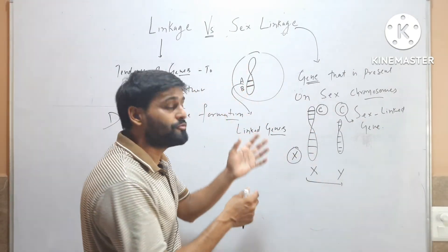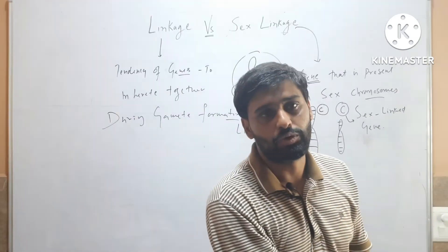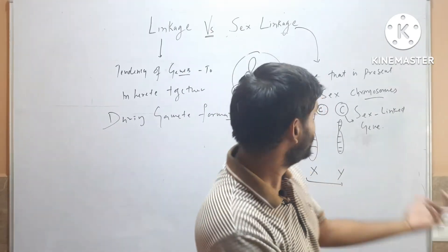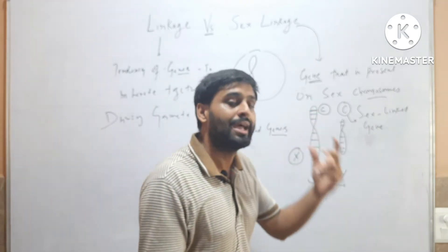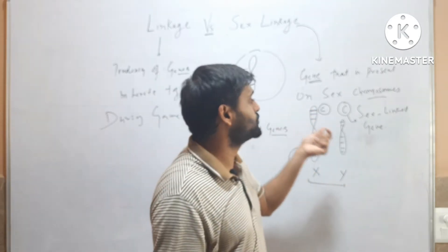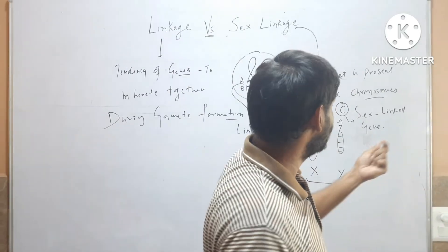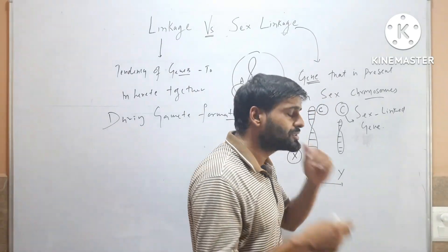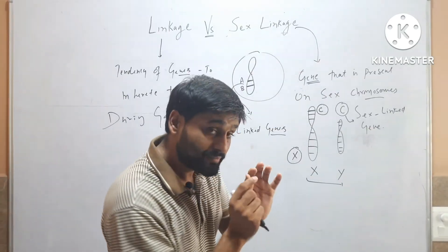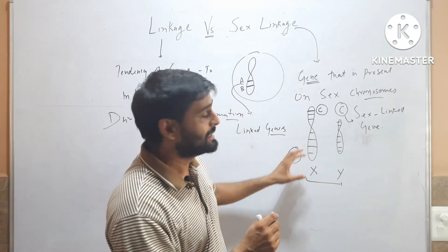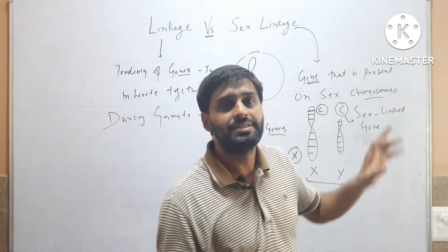In case of sex linkage, when any gene is present on a sex chromosome — for example, this C gene is present on X chromosome — this C gene will be called a sex linked gene.